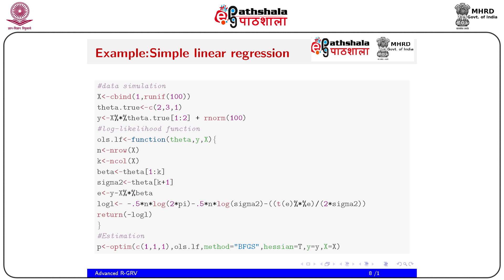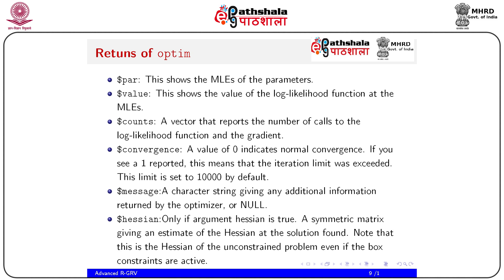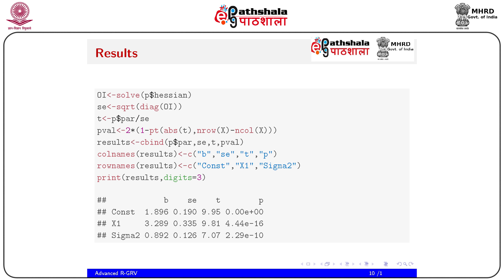Call optim with initial values c(1,1,1), the ols.lf function, method = 'BFGS', hessian = TRUE, y = y, x = x. The return values are: par — the MLE of the parameters; value — the log likelihood at the MLEs; counts — number of calls to the likelihood function and gradient; convergence — zero indicates normal convergence, one means the iteration limit was exceeded (default 10,000). Also returned: message and hessian matrix if hessian = TRUE.